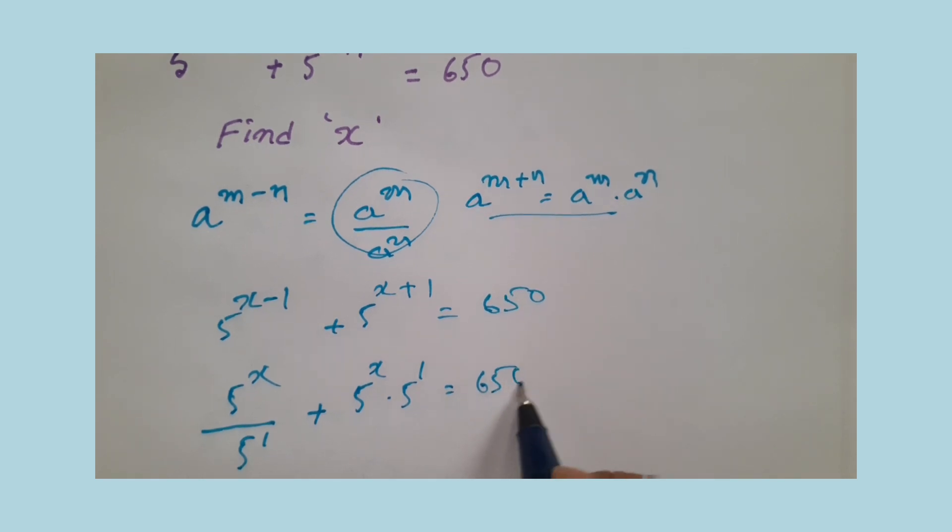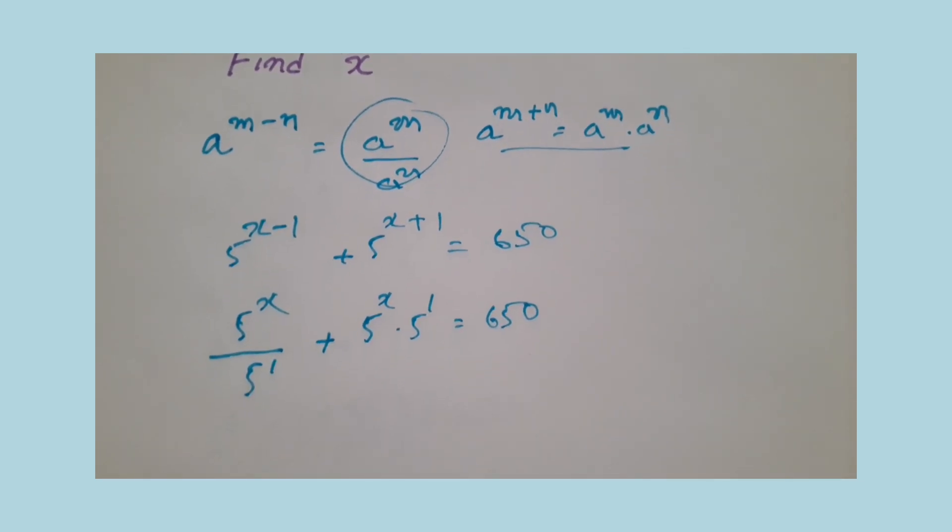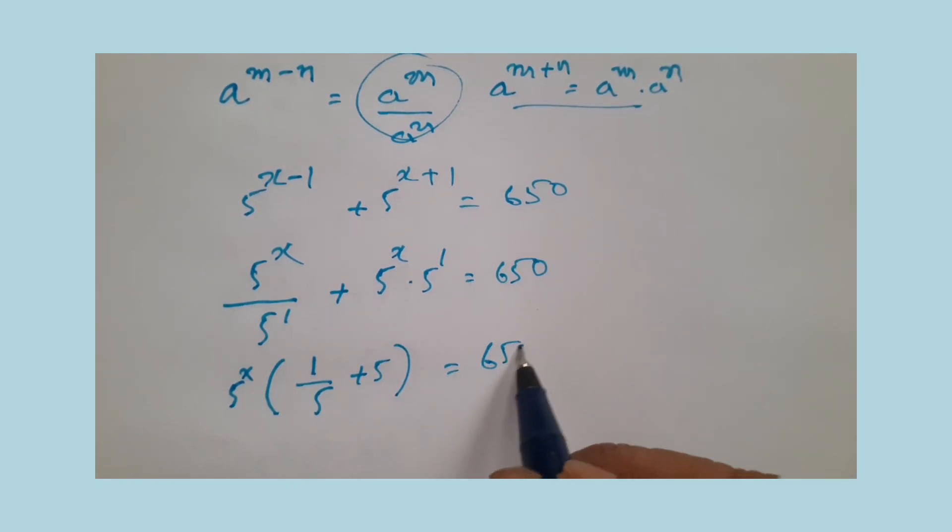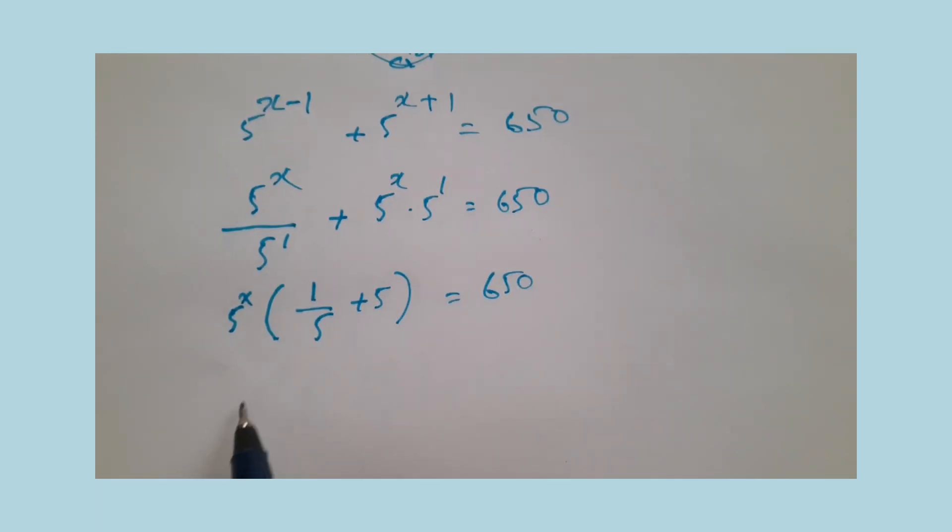Now take 5 power x as common from both terms. If you take 5 power x as common, we get 5 power x times (1/5 plus 5) equals 650.